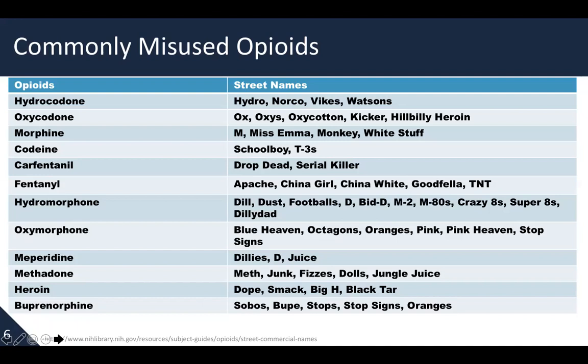Heroin is commonly called dope, smack, or the big H in our region. Buprenorphine, which is typically prescribed through waivered prescribers for the treatment of opioid use disorder under brand names Subutex or Suboxone, is often called on the street soboes, bupes, stops, stop signs, or oranges because of their orange color.